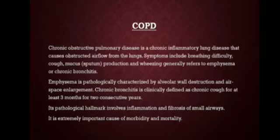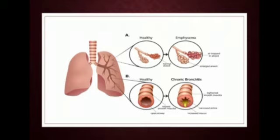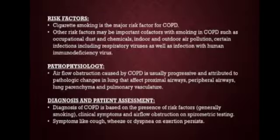Chronic bronchitis is defined as a chronic cough which continues for at least three months for two consecutive years. Its pathological hallmark involves inflammation and fibrosis of the small airways. It is an extremely important cause of morbidity and mortality. In healthy alveoli there is no air entrapped, while in emphysema patients air is trapped and alveoli are enlarged. In healthy airways smooth muscles are relaxed with open airways, while in chronic bronchitis sputum or mucus is present, smooth muscles are tightened, and there is inflammation.